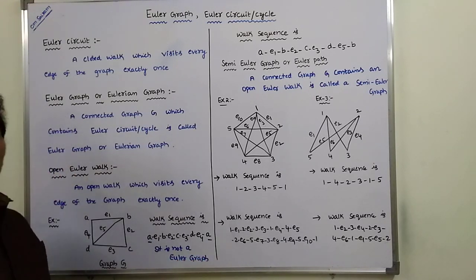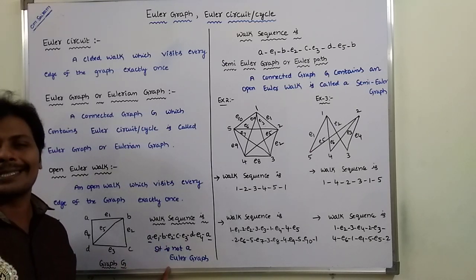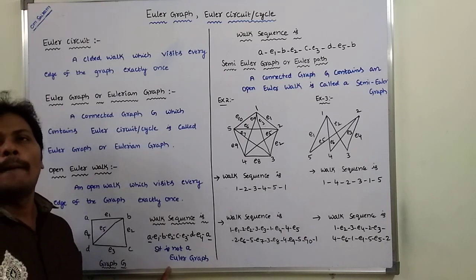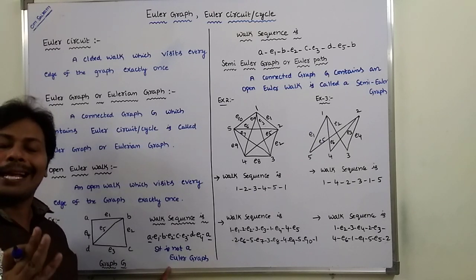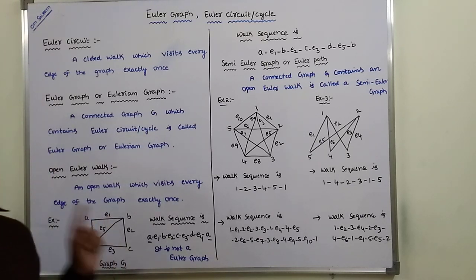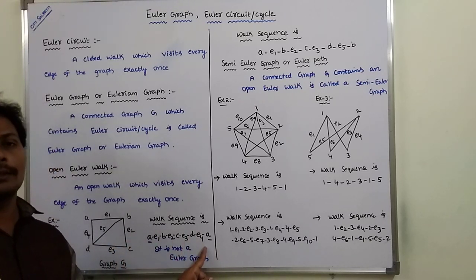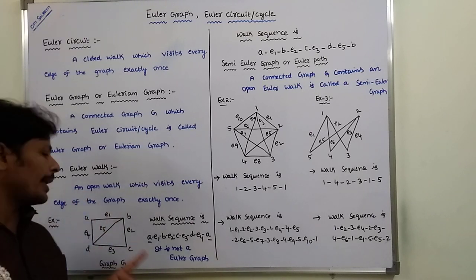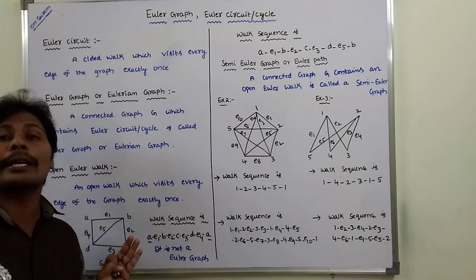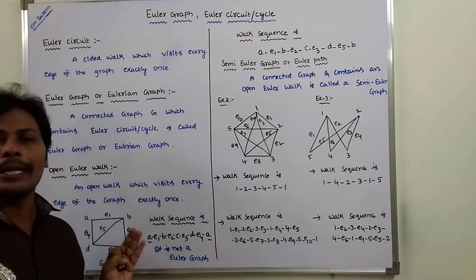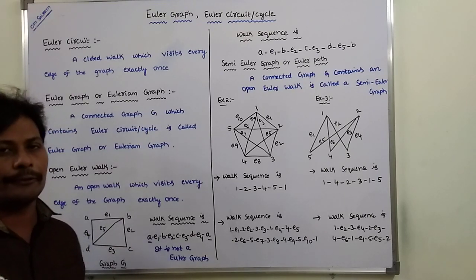The definition of Euler graph requires a Euler cycle or circuit that visits all edges exactly once. Edge E5 is not visited, though it is a closed walk — so one condition is satisfied. However, since it does not cover all edges in the given graph, it is not a Euler graph.